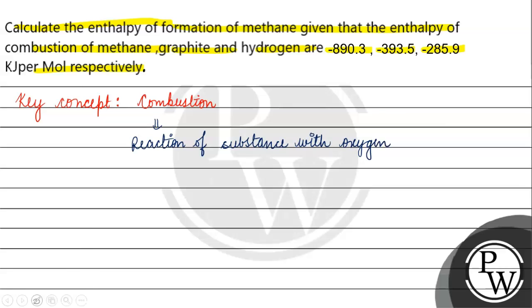Now let's talk about graphite combustion. Graphite reacts with oxygen to give carbon dioxide. The enthalpy for this reaction is -393.5 kJ/mol.